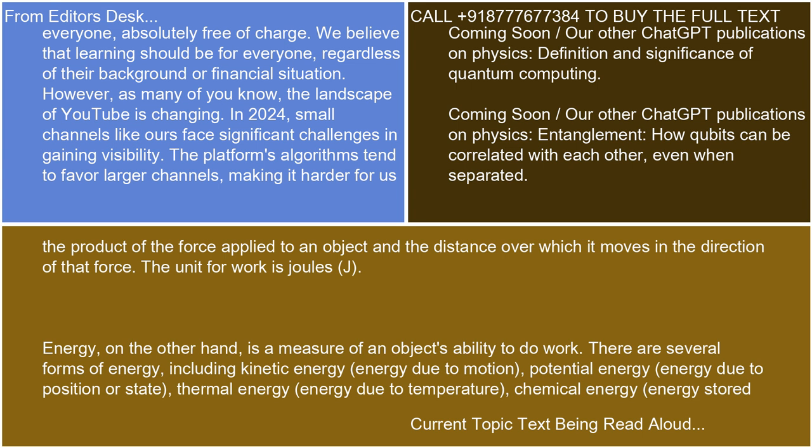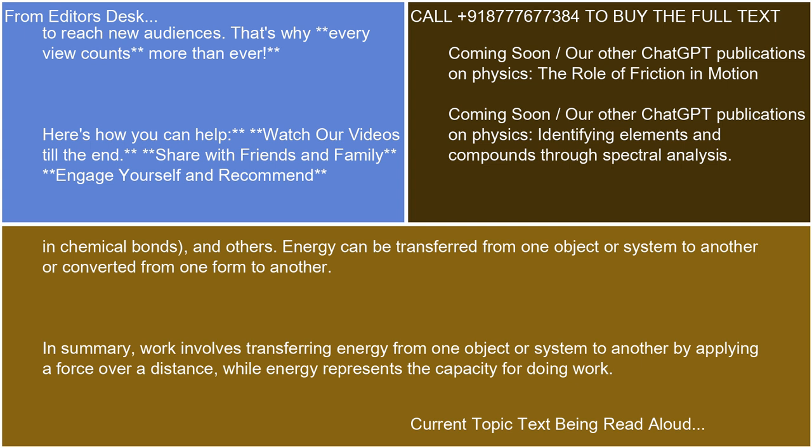Energy, on the other hand, is a measure of an object's ability to do work. There are several forms of energy, including kinetic energy — energy due to motion — potential energy — energy due to position or state — thermal energy — energy due to temperature — chemical energy — energy stored in chemical bonds — and others.